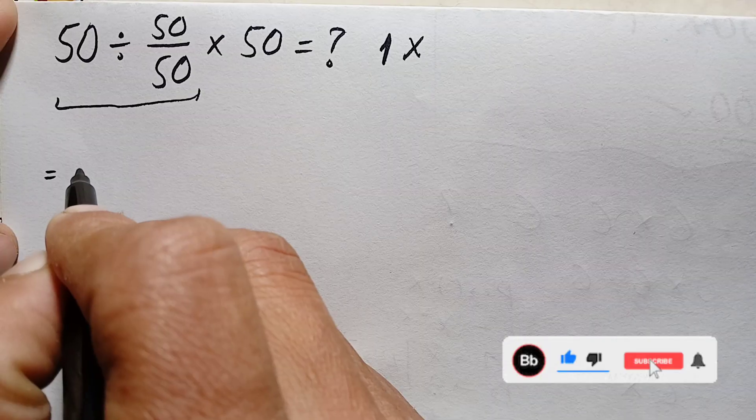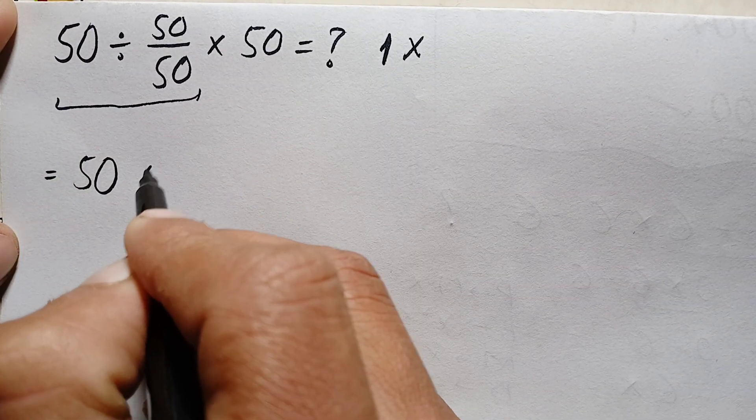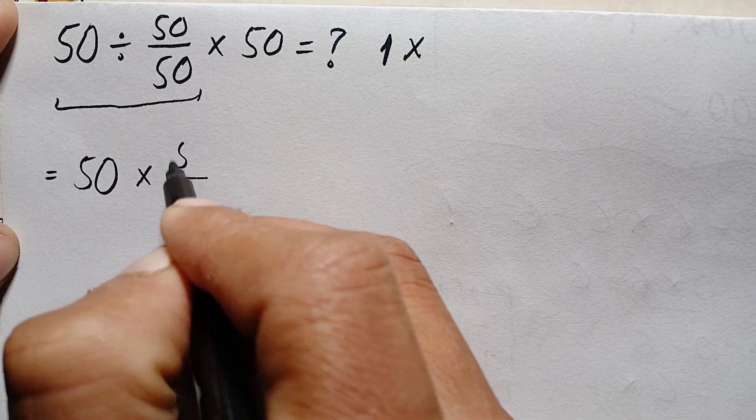We will write the first number as the same, so this 50 will be the same. We will change the division sign to multiplication, and we will take the reciprocal of this fraction. That will be 50/50 times this number 50.